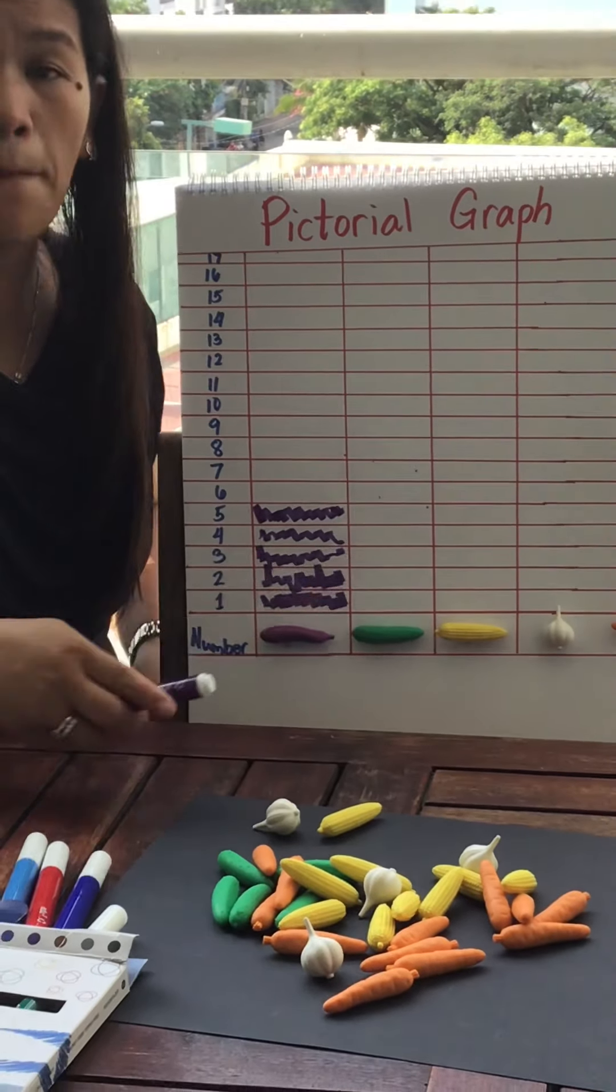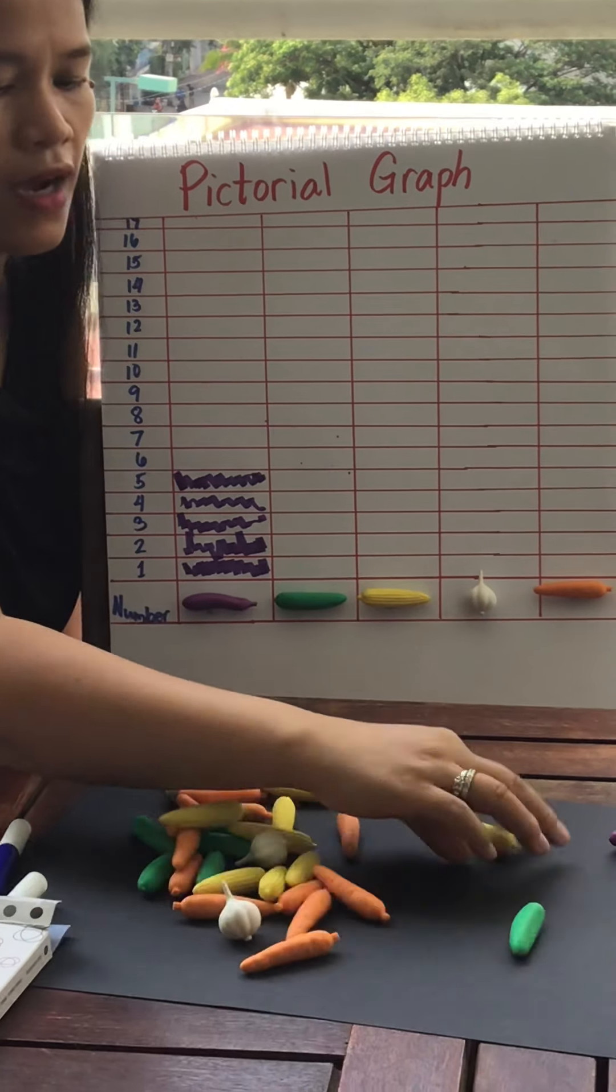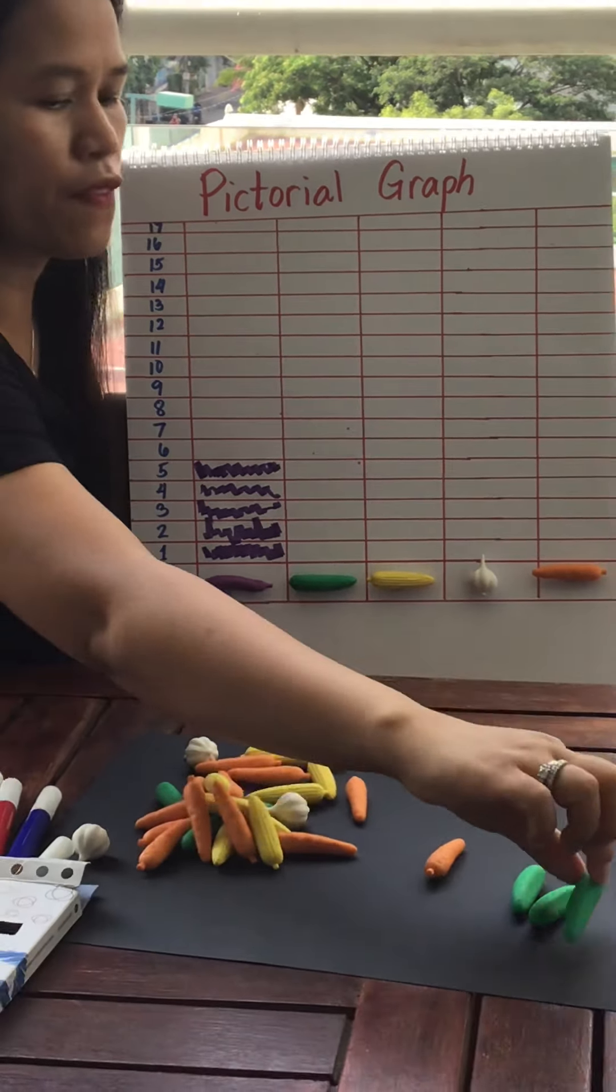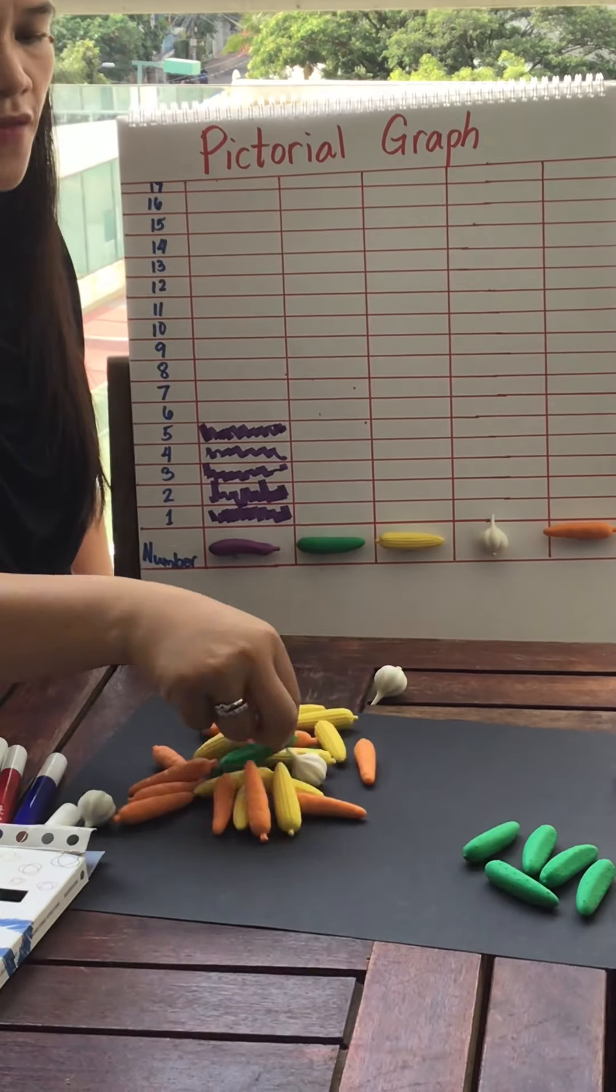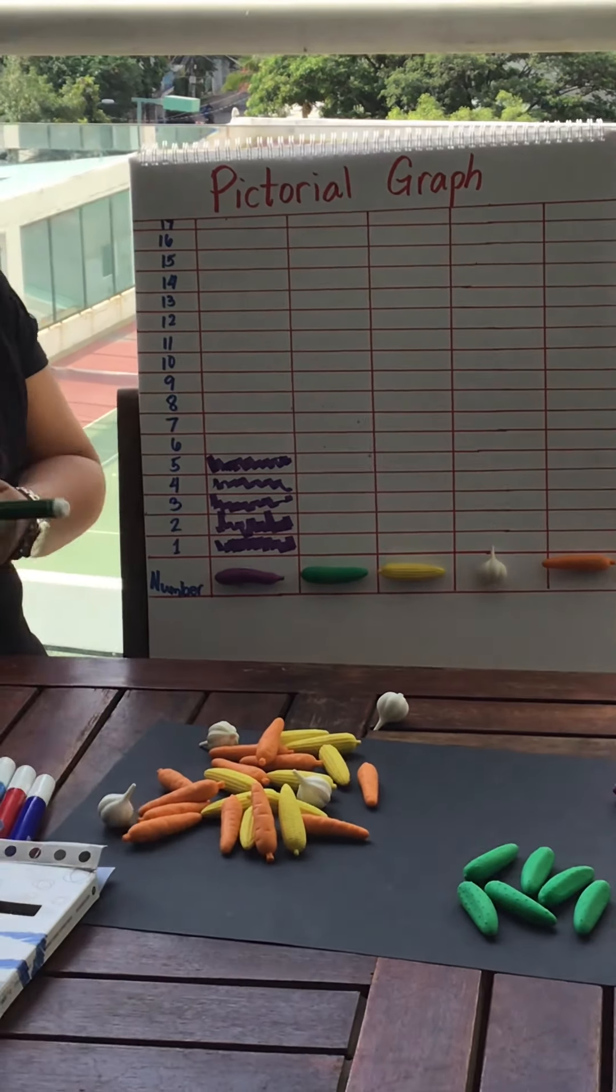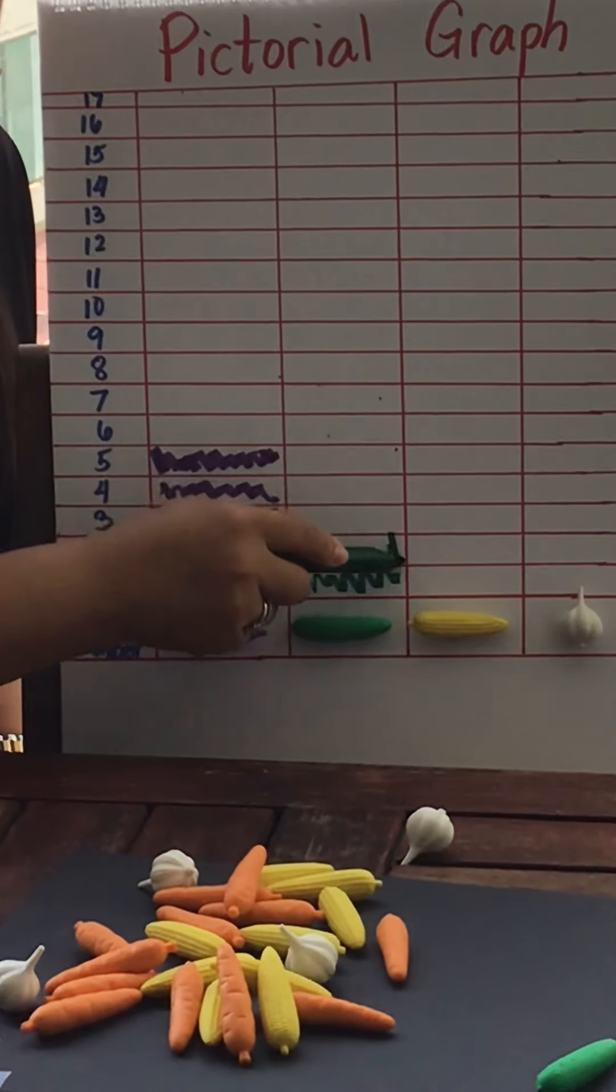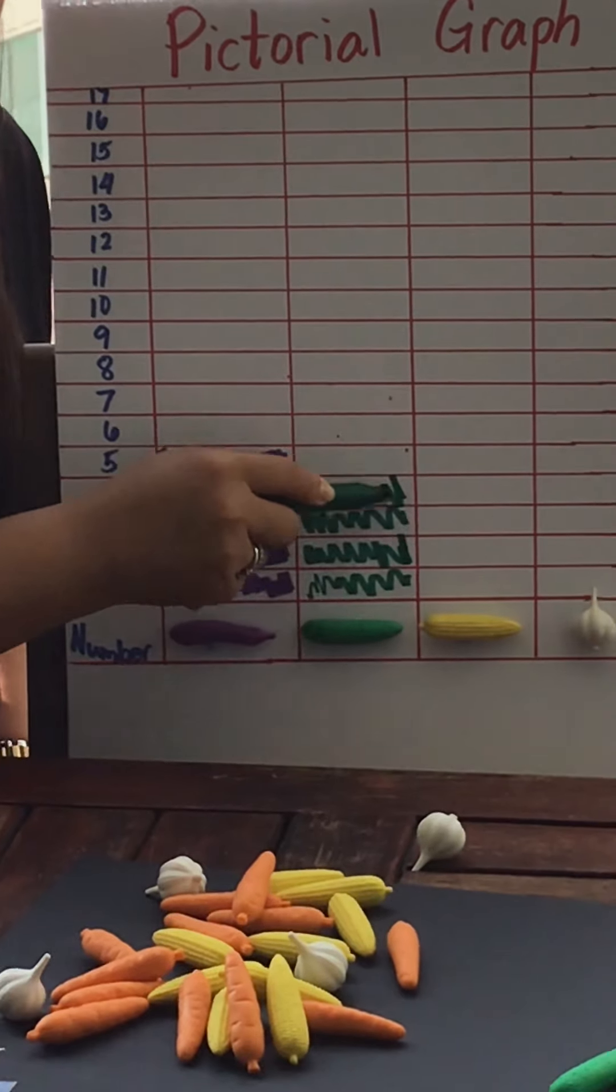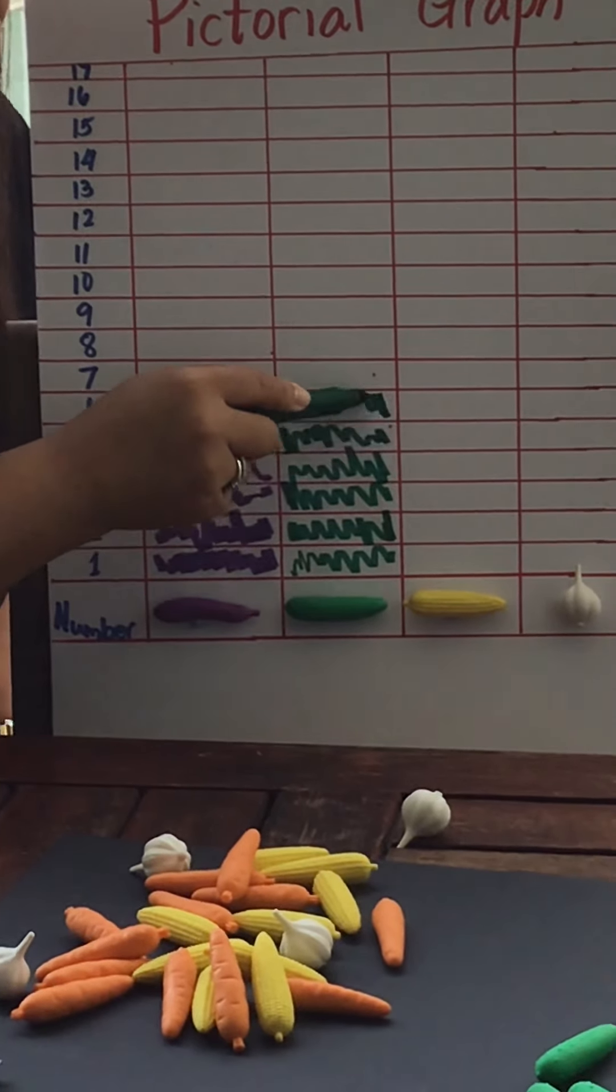Now, the cucumber. Help me count how many cucumbers do I have. One, two, three, not the carrots, four, five, six cucumbers. So I am going to use six cucumbers. One, two, three, four, five, six.